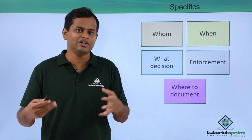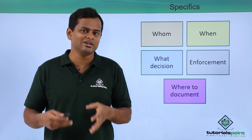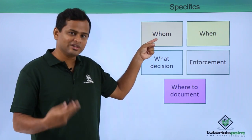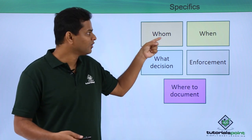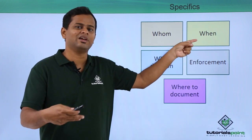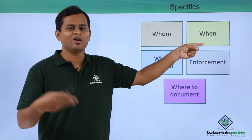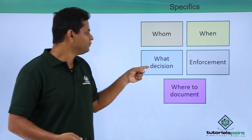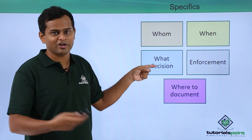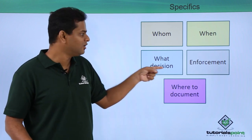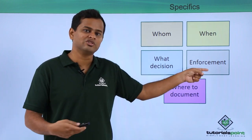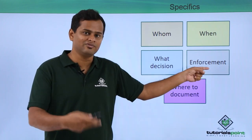Certain specifics we need to understand in escalation management are: whom we are going to escalate to, and when we have to do an escalation — because there is no point in escalating when a blunder has already happened. We also need to be clear about what decision we are expecting, what kind of situation we are in, and once a decision is taken, how it's going to be reviewed and enforced.